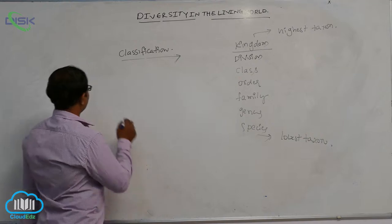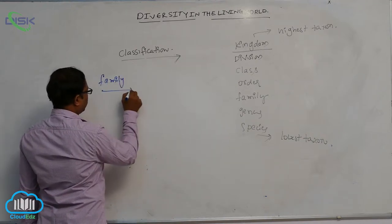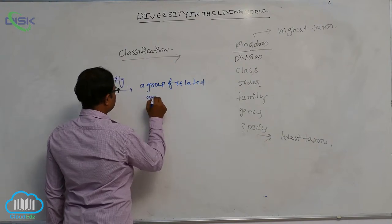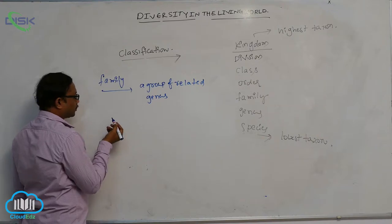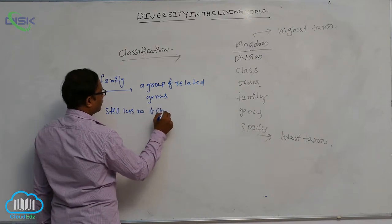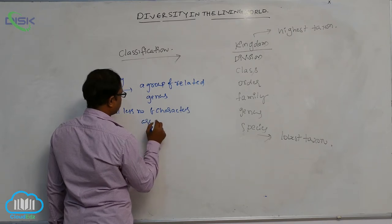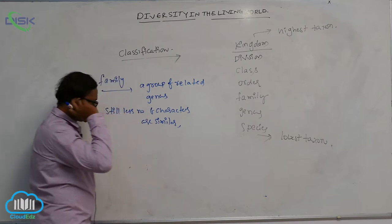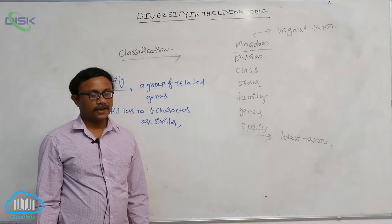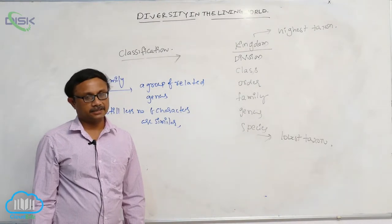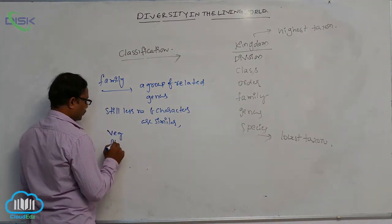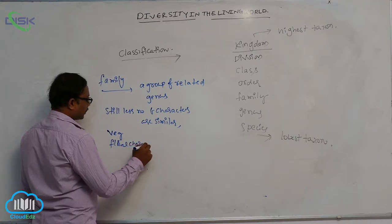Next, after genus, what is the next one? Family. A group of related genera are known as the family. Compared to the genus, it has still fewer common characters. In family also, vegetative and floral characters are similar, based on which the group is formed.